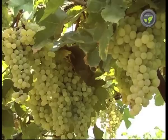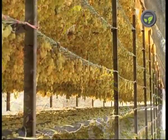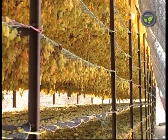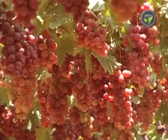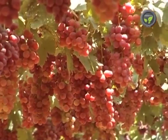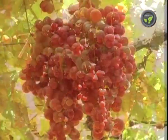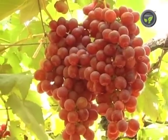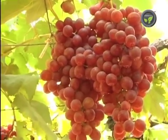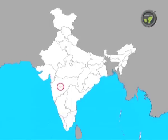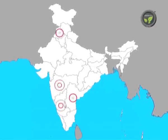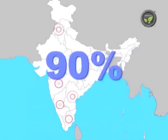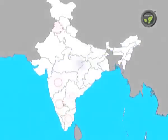A small portion of it is utilized for raisin production. Hence, we find grape varieties suitable for table purpose in most of the grape cultivation areas of India. Maharashtra, Karnataka, Andhra Pradesh, Punjab and Tamil Nadu states contribute 90% to the grape production of the country.